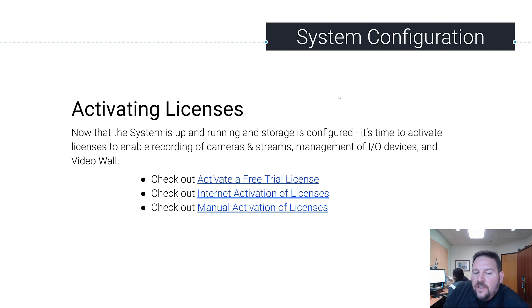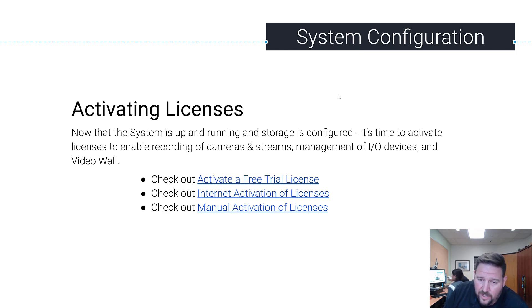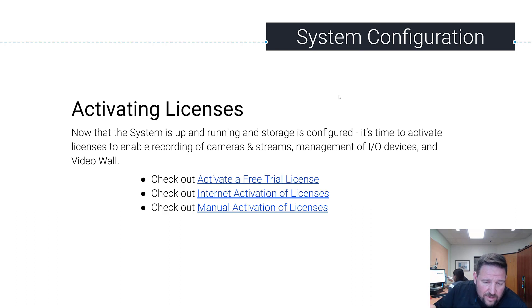There are two different ways to activate licenses: internet activation and manual activation. For internet activation, you need either one of the servers connected to the internet, or a client that's connected to the internet and also connected to your private LAN. That will allow you to activate licenses because the client can check with the internet and activate the license.